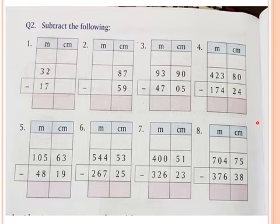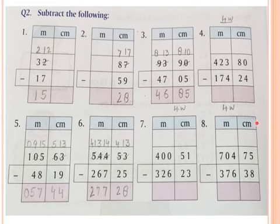Good. Just see. Answer. Yes. Right. First we subtract 17 meter subtract from 32 meter. 7 subtract from 2. 2 is smaller number.